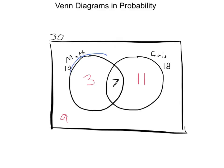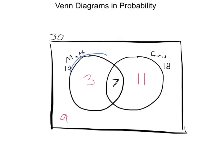I've got two problems lined up for us. Here's the first one: Enoch has 19 shirts. 12 of them are long-sleeved, and 6 of them have Thomas the Train on them. 3 of them are neither long-sleeved nor Thomas shirts. Part A: write a Venn diagram representing this information.